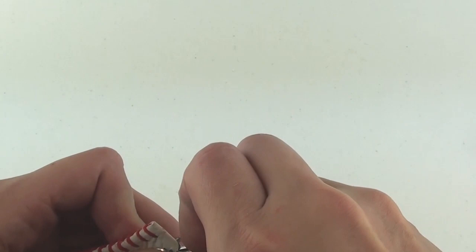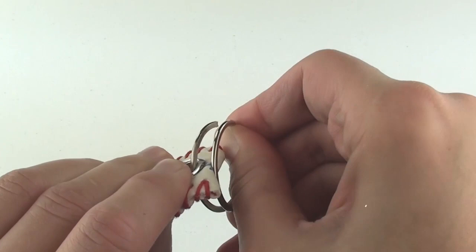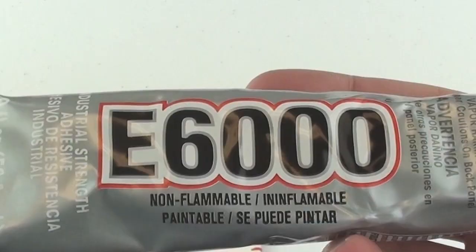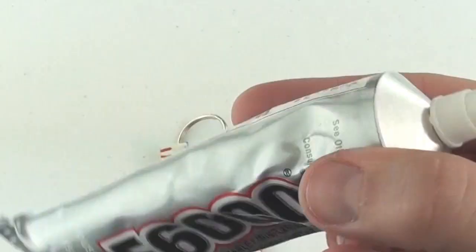If you want to decorate your keychain, I highly recommend E6000 glue. This stuff guarantees a good stick, plus it holds up to rough conditions, including moisture. You can get embroidered numbers in your favorite player's number and glue them onto your keychain.